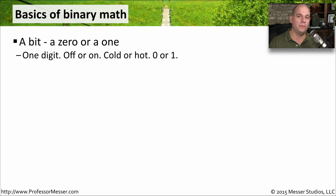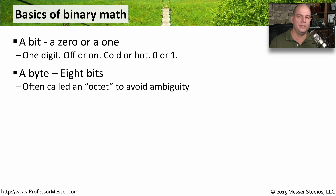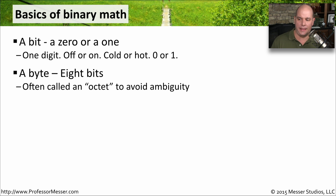We sometimes refer to this as base two, since there are only two numbers that make up this numbering system. If we combine a group of ones and zeros together into a group of eight, we often call that a byte. Sometimes you'll hear it referred to as an octet, just to make sure everyone understands that there are eight bits in that byte.